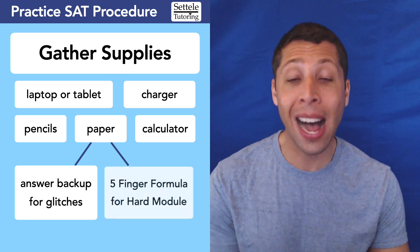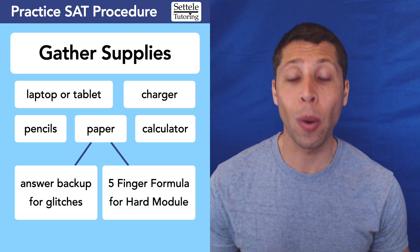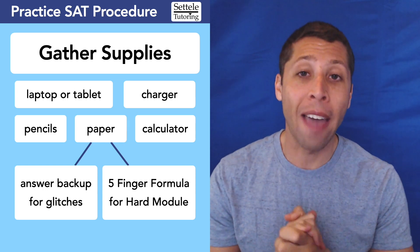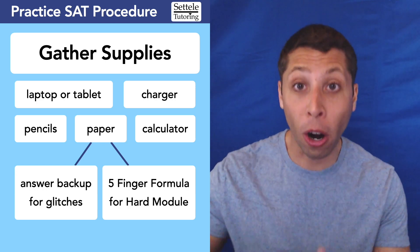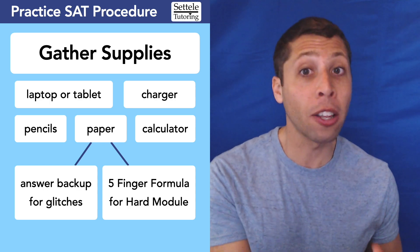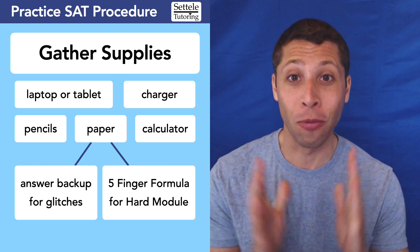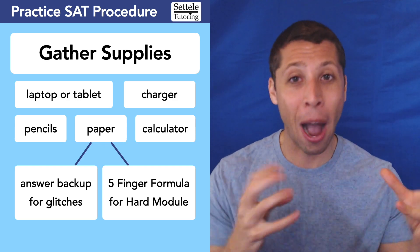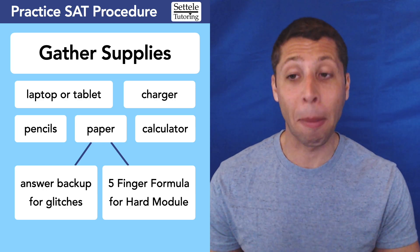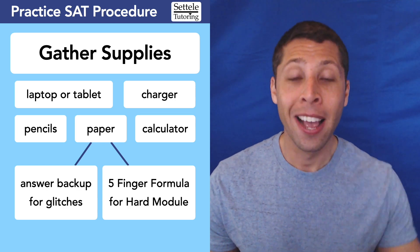You also want paper to do the five-finger formula. I have a whole lesson about what this is, but basically it is a way of keeping track of your wrong answers using your hand. That is a way to make sure that you get into the hard module for both reading and math. We can only get a certain number wrong, and if we don't get into the hard module, our score is capped at about a 1,200 total — 600 per section. So it's very important that we have a record of how we were thinking during the test. Watch that video about the five-finger formula if you haven't already.